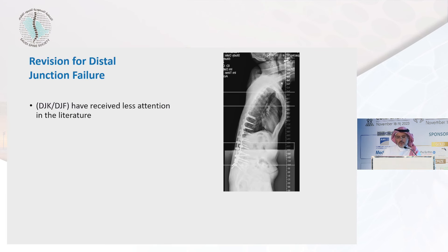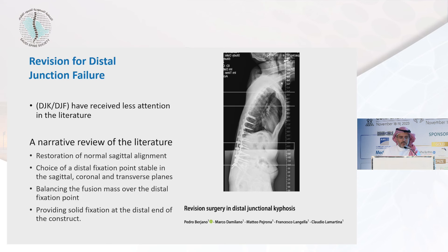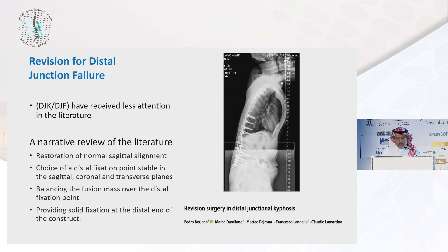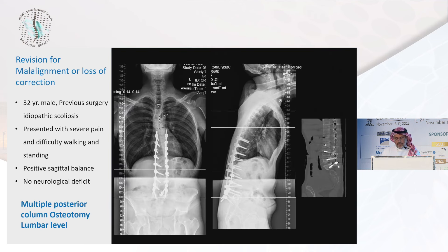Let's go to distal junctional failure. A narrative review addressing all aspects supports the importance of restoring normal sagittal alignment. The choice of distal fixation point should be in a stable sagittal, coronal, and transverse plane. Balance the fusion mass proximal to the screw — don't ask too much of your screw. If you have a fusion mass proximal to the distal screw, you need to do good osteotomy to improve it. Provide solid fixation distal to the end of the construct.